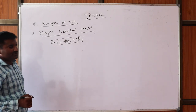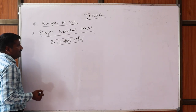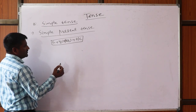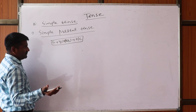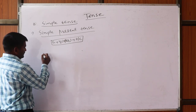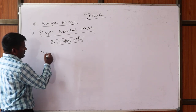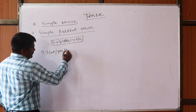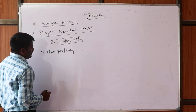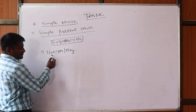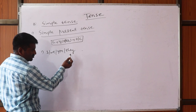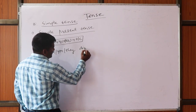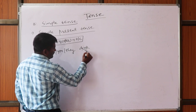For persons, we have two categories. First: I, we, you, and they — where I and we are first person, you is second person, and they is third person plural. These always take only V1, the base form of the verb.